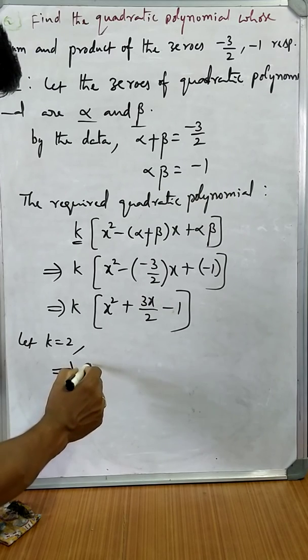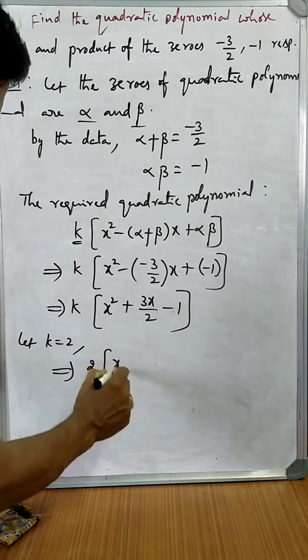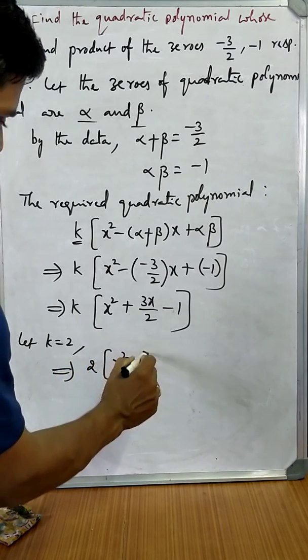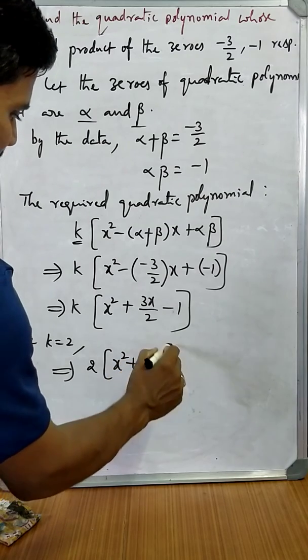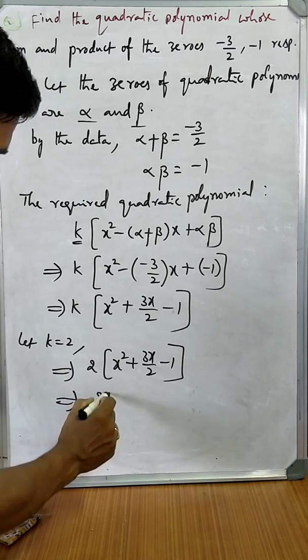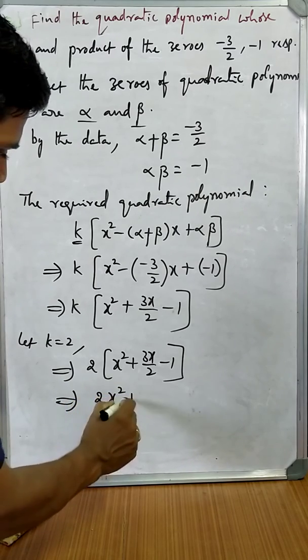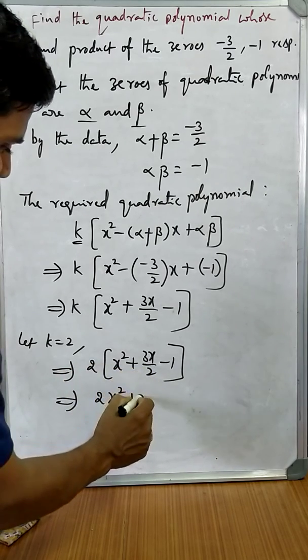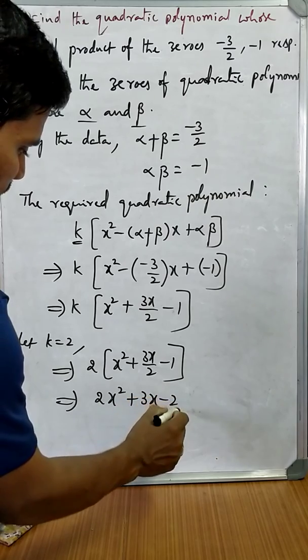That is 2 times x square plus 3x by 2 minus 1, which gives 2x square plus 3x minus 2.